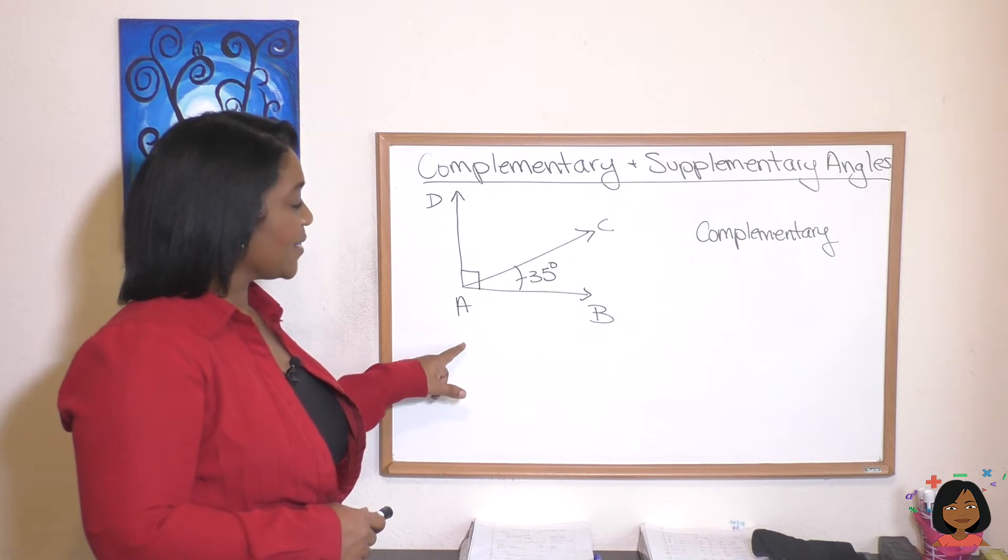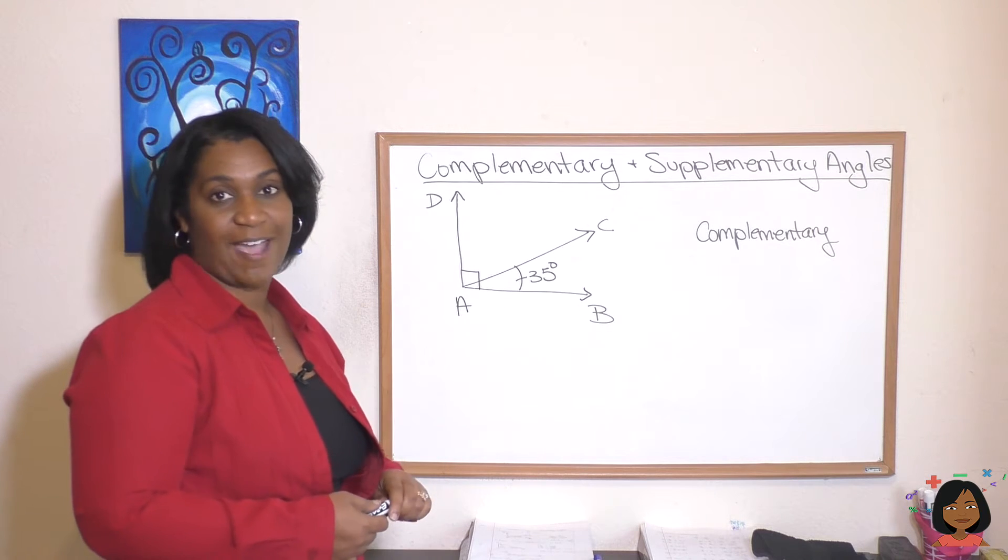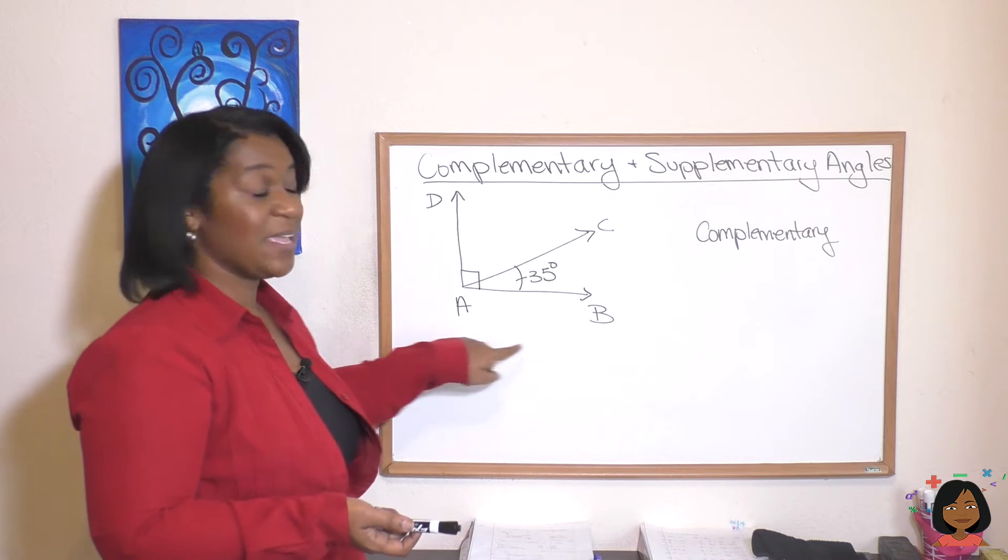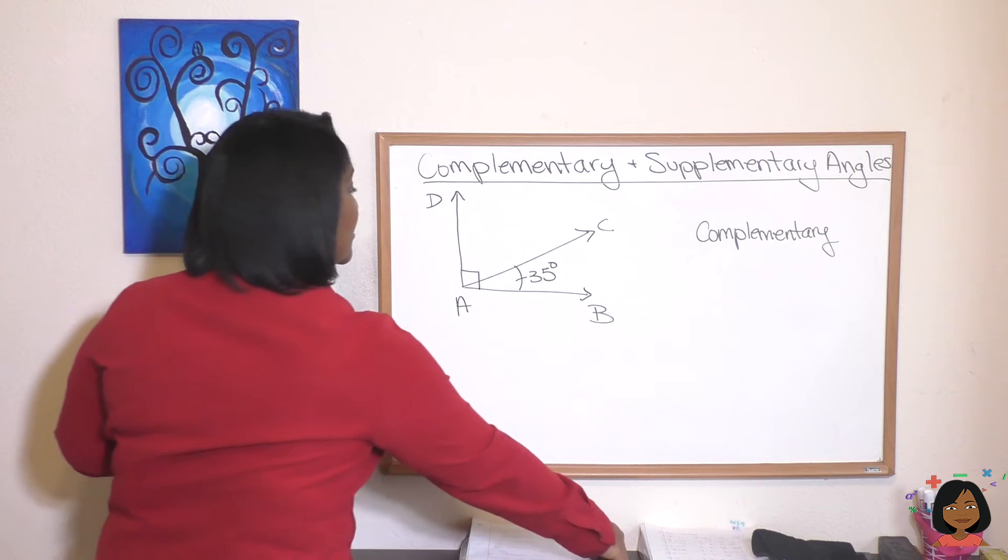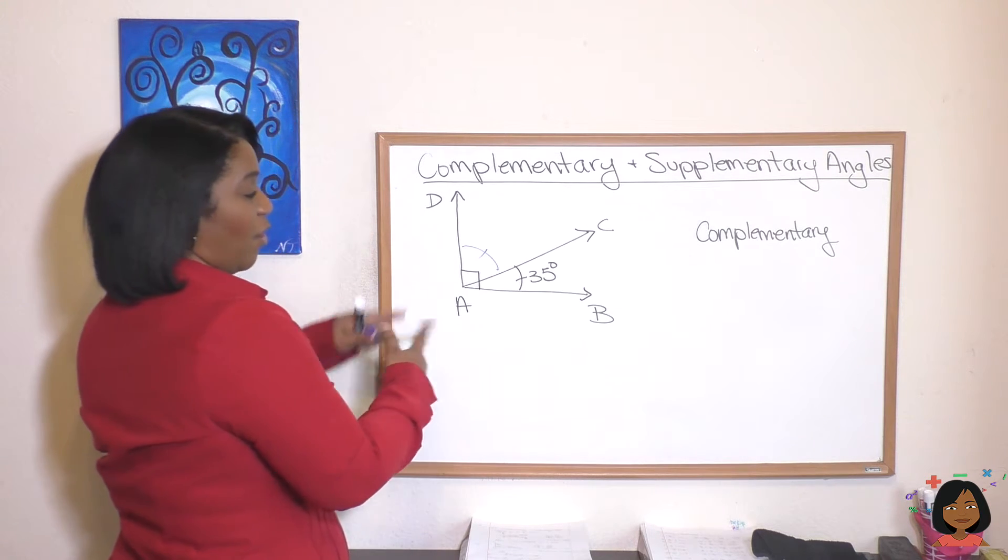We can see that angle CAB is 35 degrees, but I've told you that angle DAB is 90 degrees. So our job is to find out how much is this angle right here.